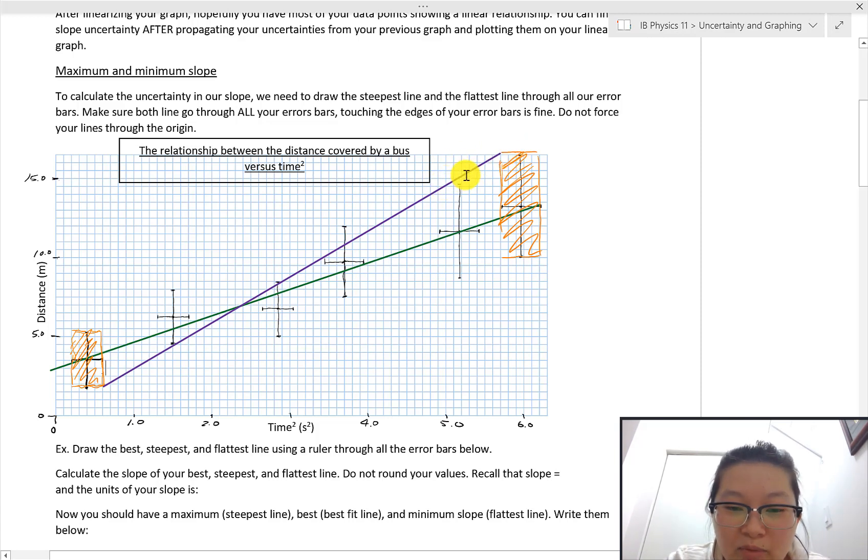But anyway, so what you want to do is you want to make sure this purple line is able to intersect all of these error boxes that I have. So notice this intersects this error box here. It goes through this error box. It does touch this error box and it touches this error box as well. And there you go. That's a check. Good. That's a check for our steepest slope.